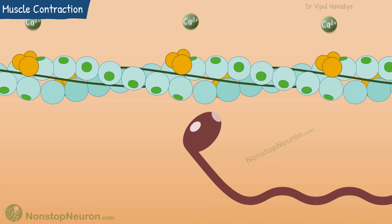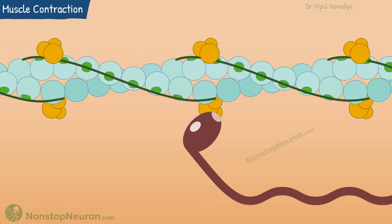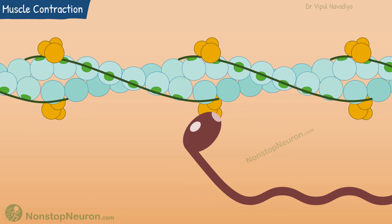So calcium dissociates from troponin. This moves the tropomyosin back to the resting position where it covers the active sites on the actin molecules. The myosin head can no longer bind with actin and the process stops.